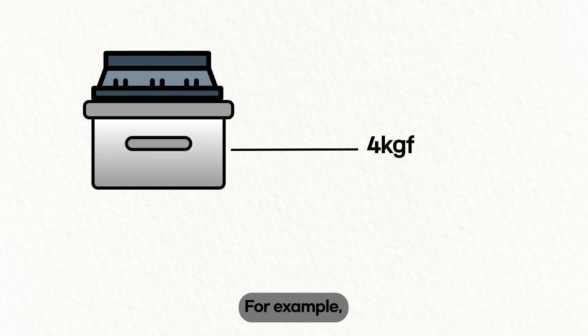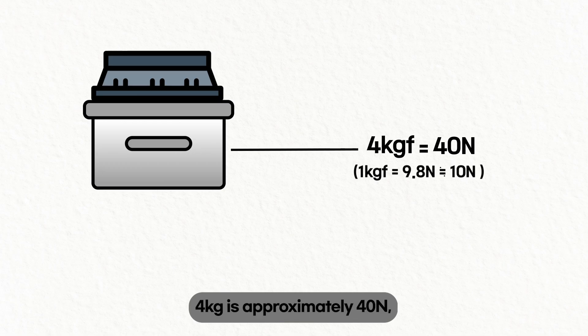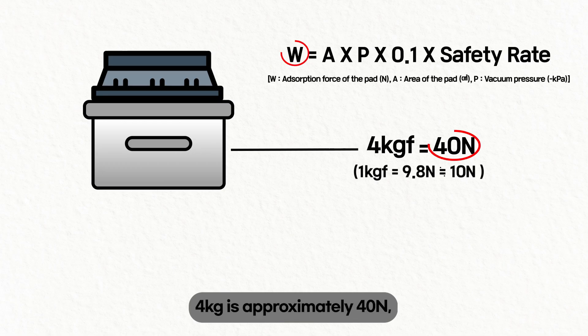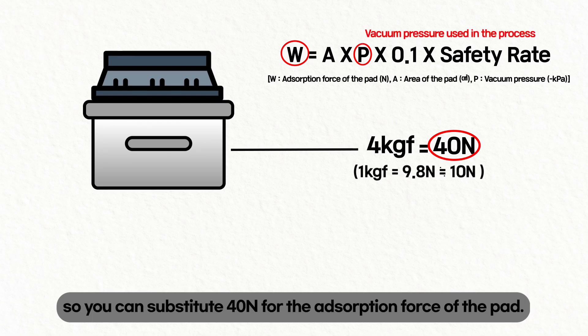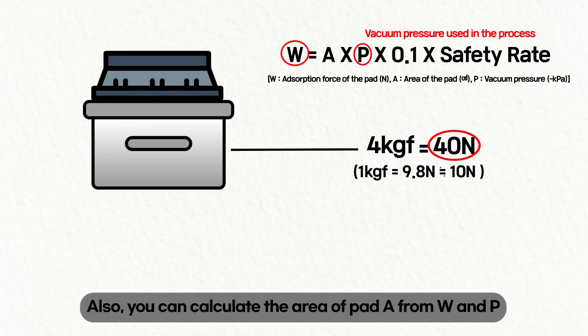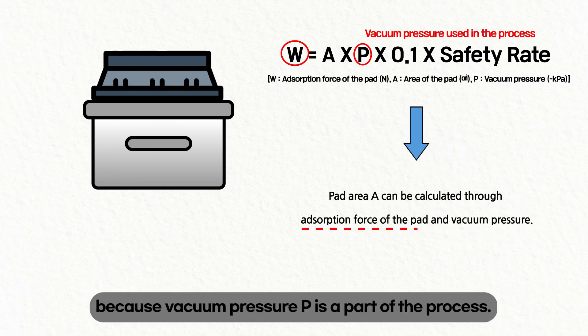For example, let's say we lift an object weighing 4 kilograms. 4 kilograms is approximately 40 newtons, so you can substitute 40 newtons for the absorption force of the pad. Also, you can calculate the area of pad A from W and P because vacuum pressure P is a part of the process.